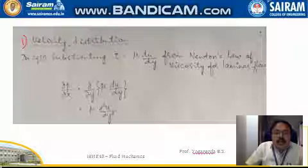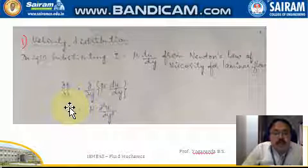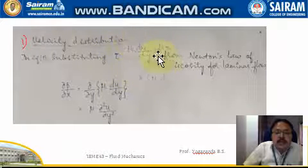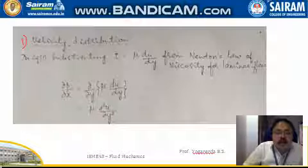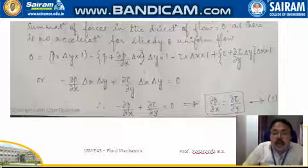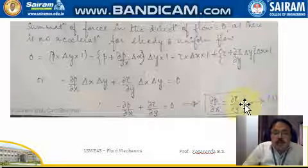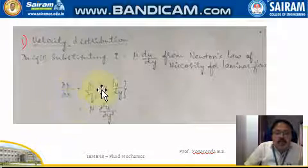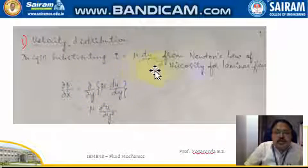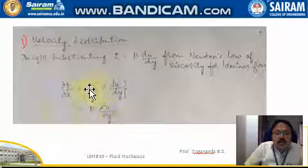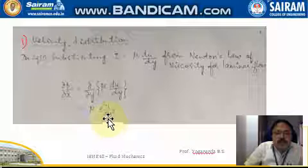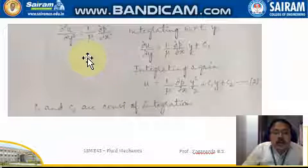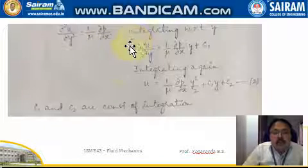For velocity distribution, we substitute Newton's law of viscosity for laminar flow: tau = mu times (du/dy). Substituting tau into Equation 1, we get ∂P/∂x = ∂/∂y of (mu times du/dy), which gives mu times (∂²u/∂y²). Therefore, ∂²u/∂y² = (1/mu) times (∂P/∂x).